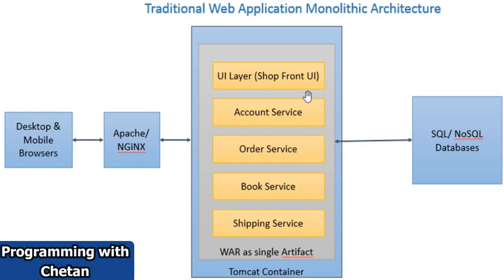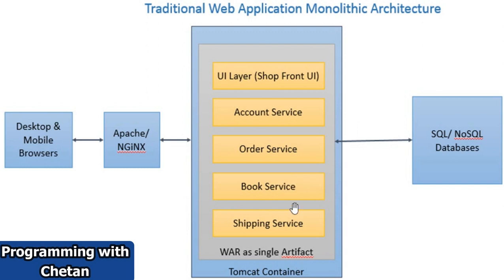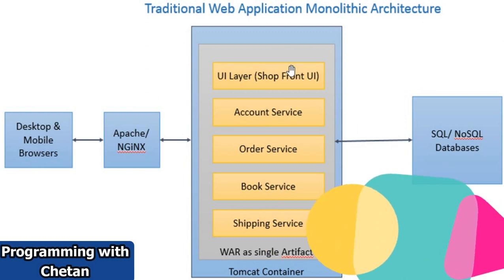Let us first try to understand monolithic architecture. If we talk about monolithic, then 'mono' means single and 'lithic' means system, so it is a single system. Here on your screen you can see this single system which comprises a UI component, a backend service, and a database layer — all combined together into a single unit. That is nothing but a monolithic system.